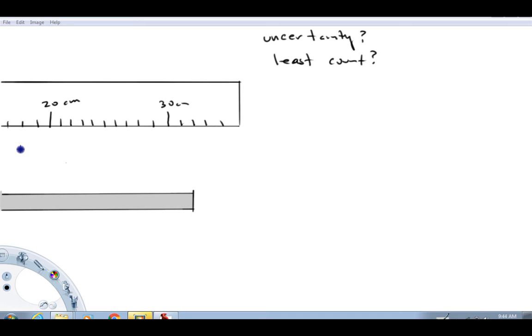And all measuring instruments have what's called a least count. And the least count is the smallest unit that the instrument has a measurement for. So these hash marks here are basically one centimeter hash marks. So this is 21, 22, 23, etc. So those hash marks represent one centimeter. So the least count of this instrument is one centimeter.